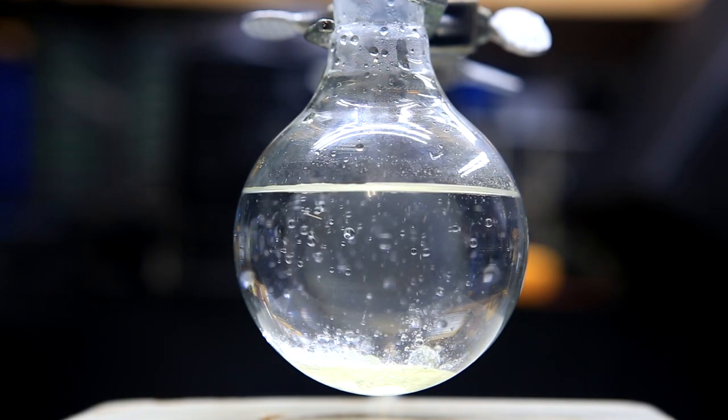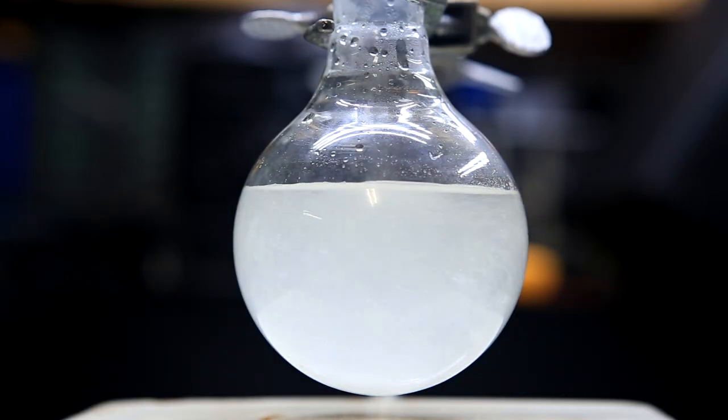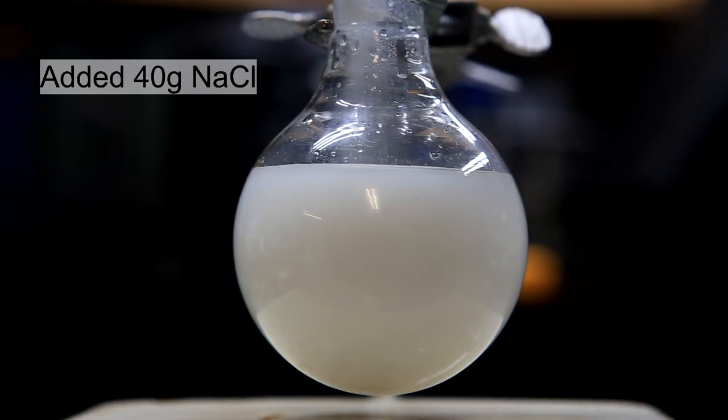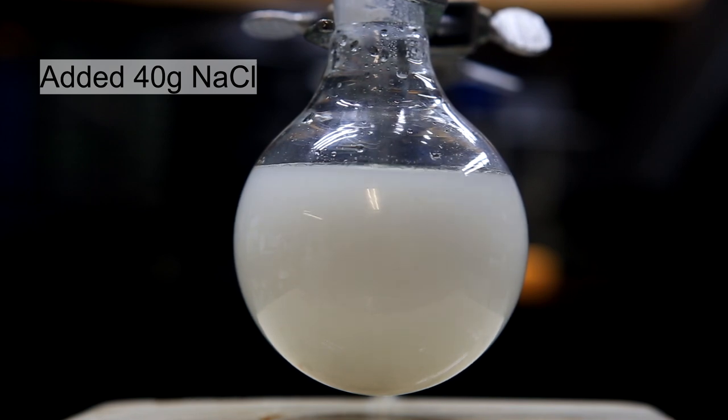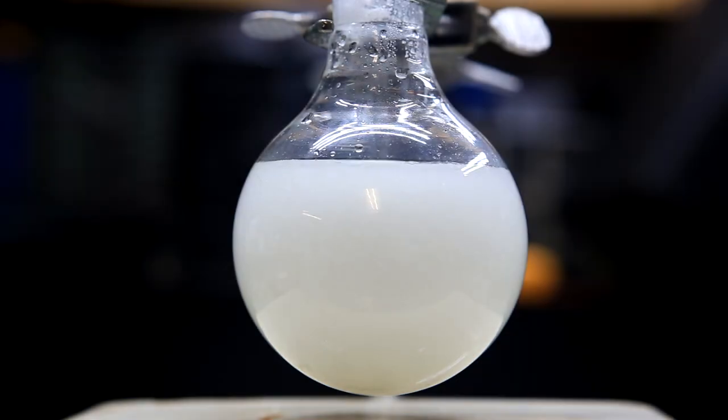To the flask was then added a stir bar. Because, as I said earlier, aniline is soluble in water, we're going to have to use salt to salt out as much as possible. So, to the distillation flask was added 20 grams of commercial salt per 100 grams of distillate. So, in my case, I added about 40 grams of table salt.